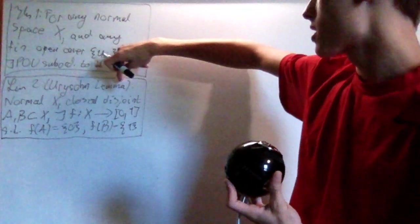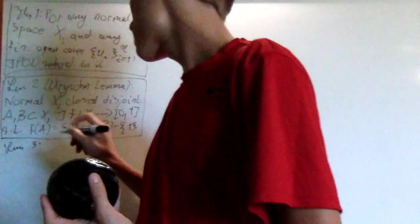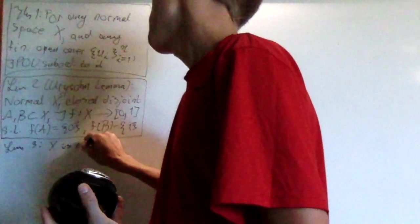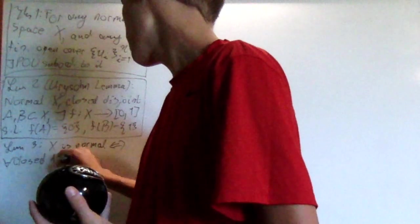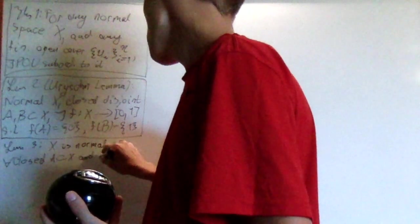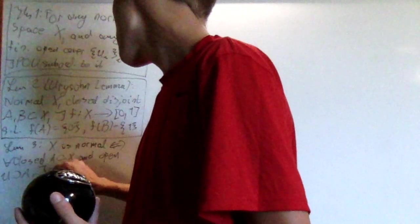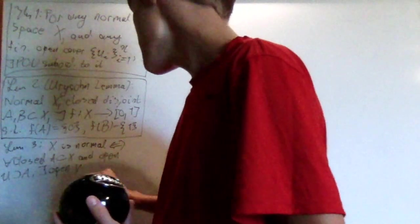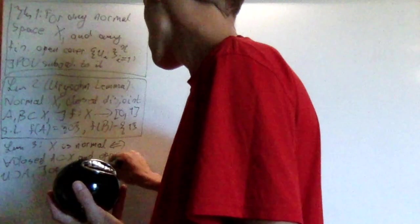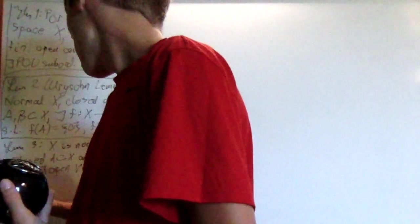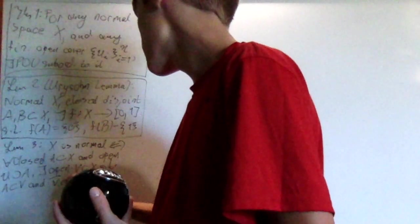Anyway, we're going to use this lemma along with another lemma, which says that x is normal if and only if, for every closed a, a subset of x, and open u, which contains a, there exists an open v, a subset of x, such that a is a subset of v, and v closure is a subset of u.